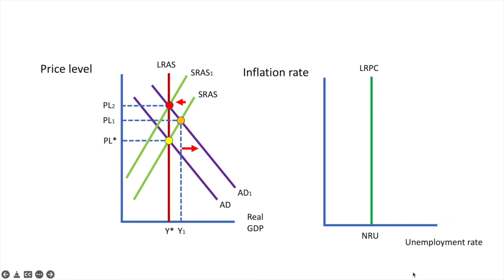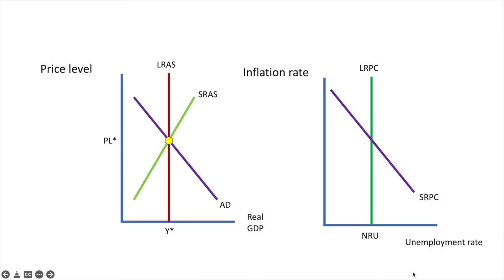Let's connect this to the short-run and long-run Phillips Curves. I'll use straight lines for the short-run Phillips Curve for the sake of simplicity. The price level PL-star can be taken across and changed to I1 for the Phillips Curve model. We know that unemployment is at the natural rate and that corresponds to an inflation rate of I1.